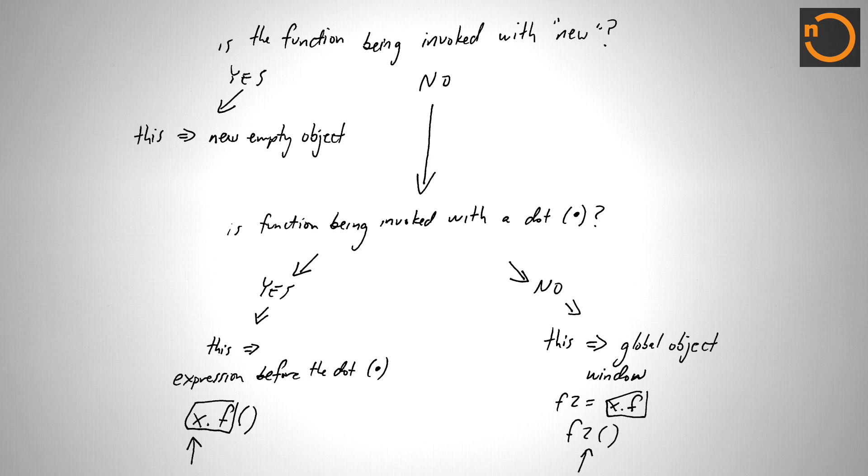So these three cases, is the function being invoked with new, yes or no, and if not, is the function being invoked with a dot, yes or no, covers the three main cases for how the JavaScript runtime will decide by itself what this should be bound to.